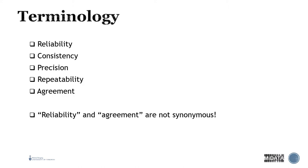Let's look at terminology. It really depends on your perspective — whether you're in medicine, the pure sciences, or testing and measurement. You have reliability, consistency, precision, repeatability, and agreement. Just a heads up: repeatability and agreement are not synonymous, and we're going to go over a few of these in this lecture.